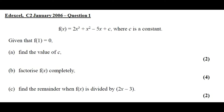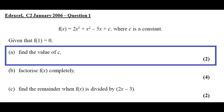Question 1: f of x is 2x cubed plus x squared minus 5x plus c, where c is a constant. Given that f of 1 is equal to 0, and in part A, find the value of c.